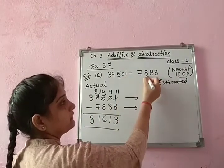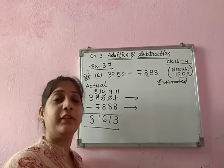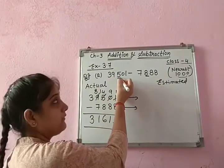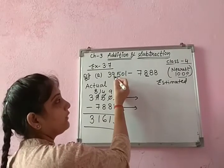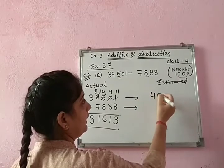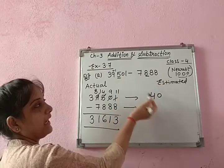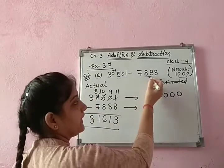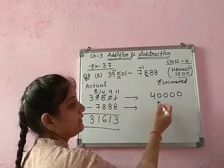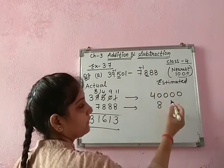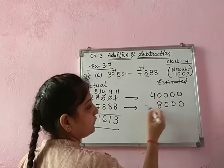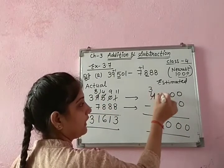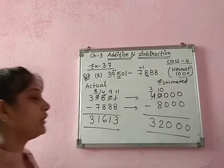Now estimate to nearest thousand. 1000 has 3 zeros, so we look at the hundreds digit. For 39,501, the hundreds digit is 5 — equal to 5, so add 1. 9 plus 1 is 10, carry 1: 3 plus 1 is 4. So it becomes 40,000. For 7,818, the hundreds digit is 8 — greater than 5 — so add 1: 7 plus 1 is 8,000. Subtract: 40,000 minus 8,000 — 10 minus 8 is 2, giving 32,000.